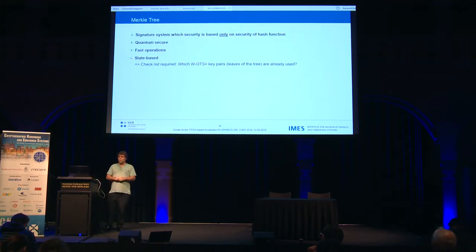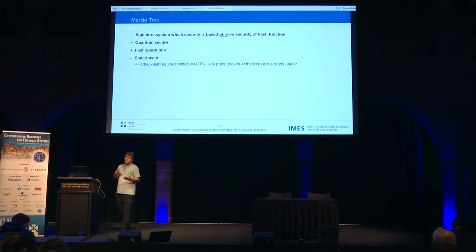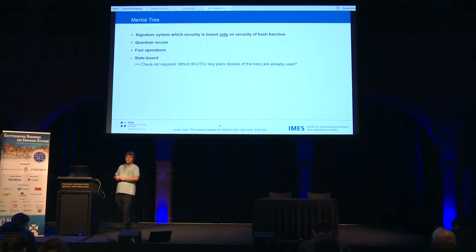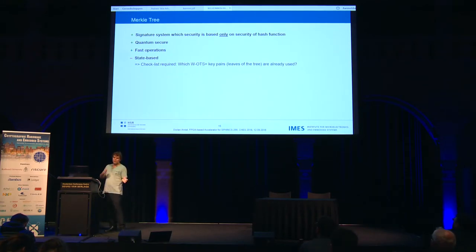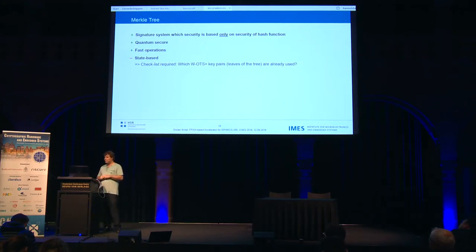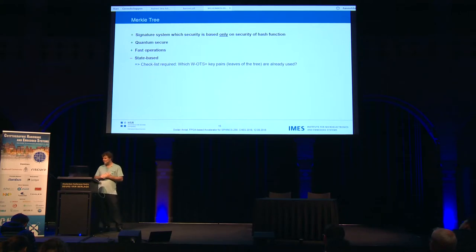But we still have a problem. We have to keep a list of which key pairs and nodes we have already used, because if we have a crash or something on our system, we have to ensure we don't start from the beginning and reuse key pair 1 if it was already used. This is called the stateful problem, which is a criticism of hash-based signatures.